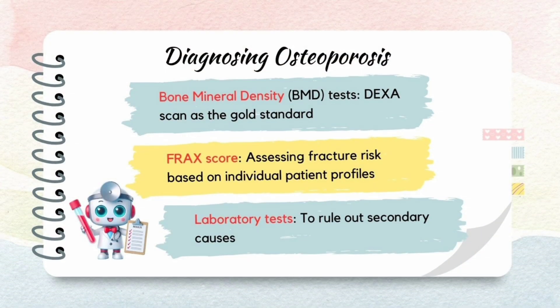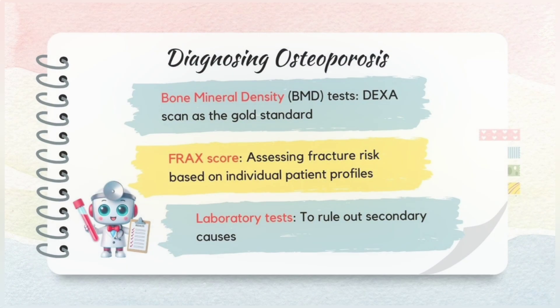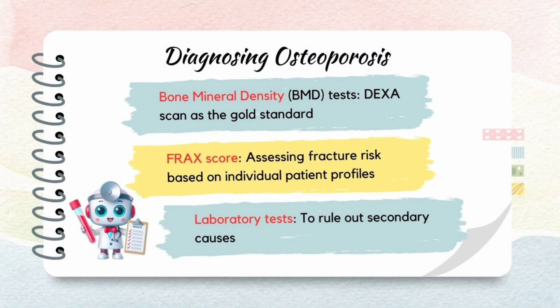Talking about the diagnosis of osteoporosis. Main diagnostic tests involve a DEXA scan, FRAX score, and some laboratory tests to rule out secondary causes of osteoporosis. Patients with a diagnosis of osteoporosis should also have a laboratory assessment of their renal and thyroid function, as well as vitamin D and calcium levels.